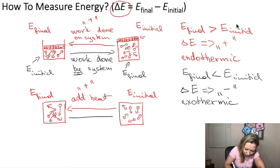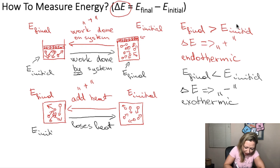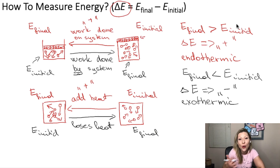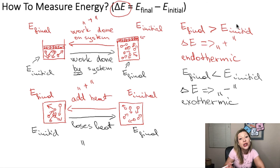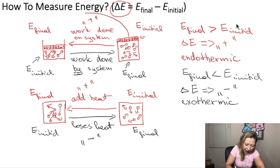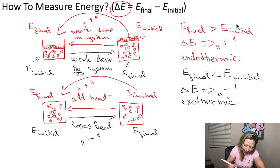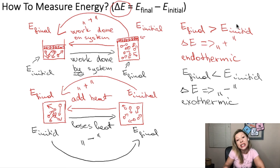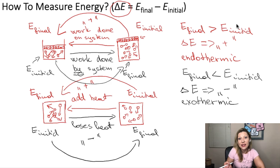If I go backwards, this means that the system loses heat. If I compare the initial internal energy with the final internal energy, my final internal energy is actually going to be smaller. So I'm going to end up with a process where the change in internal energy is going to be negative — an exothermic process. As I go in both of these cases from left to right, I am going to increase the internal energy of the system, and as I go backwards, I'm going to decrease it via an exothermic process.